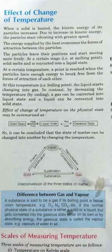At a certain temperature, a point is reached when the particles have enough energy to break free from the forces of attraction of each other. एक निश्चित ताप पर पहुँचने के बाद, particles में energy अधिक हो जाने के कारण वो एक दूसरे से break हो जाते हैं और उनके बीच force of attraction टूट जाता है. At this temperature, the liquid starts changing into gas — this is called the boiling point. वो निश्चित ताप जिस पर कोई तरल पदार्थ boil होकर gas के form में बदल जाए, वो point boiling point कहलाता है.